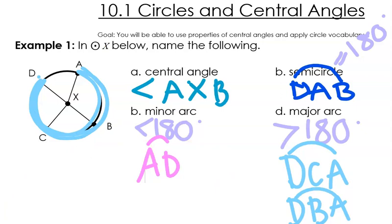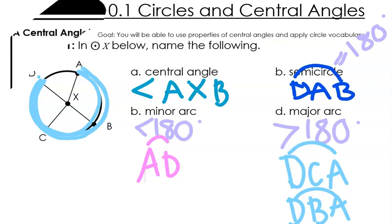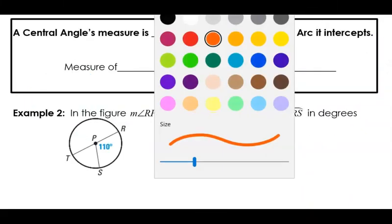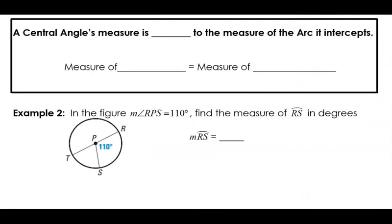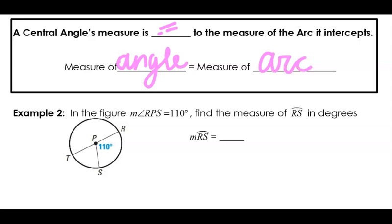I hope this helps you understand naming the angles and the arcs. Our next big idea: when you have a central angle, it is equal to the measure of the arc. So whatever the measure of the angle is — if we're talking about the central angle — it is the same as the measure of the arc. Only if this is, let's just be super clear, a central angle. So a central angle is the same as the arc.